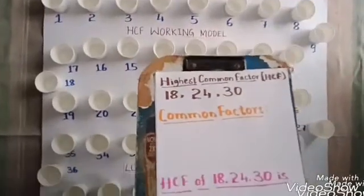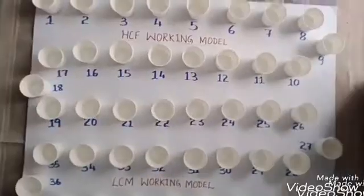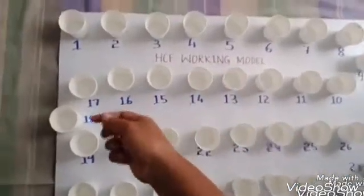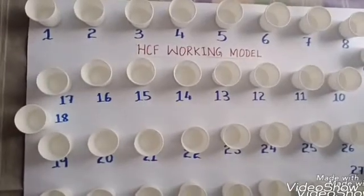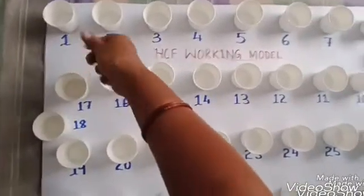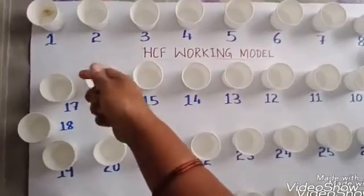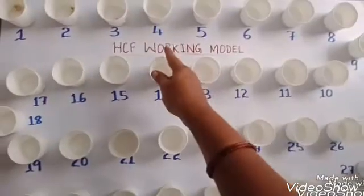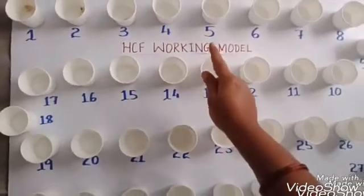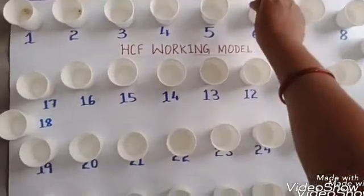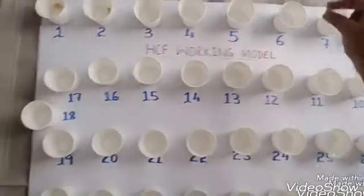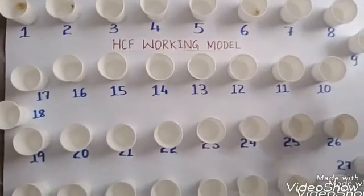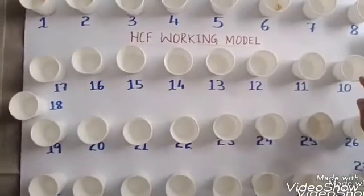To find the HCF of 18, 24, and 30 using this model, I'll take some beads — you can see beads in my hand. First, we'll find the common factors of 18. In the one table, do you get 18? Yes — one 18s are 18. In the two table? Yes — two nines are 18. In the three table? Yes — three sixes are 18. Four table? No. Five table? No. Six table? Yes — six threes are 18. Seven table? No. Eight table? No. Nine table? Yes — nine twos are 18. Ten table? No.